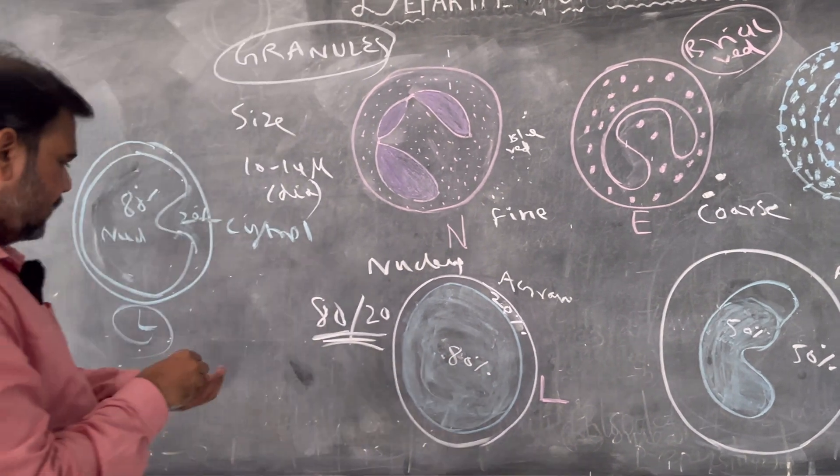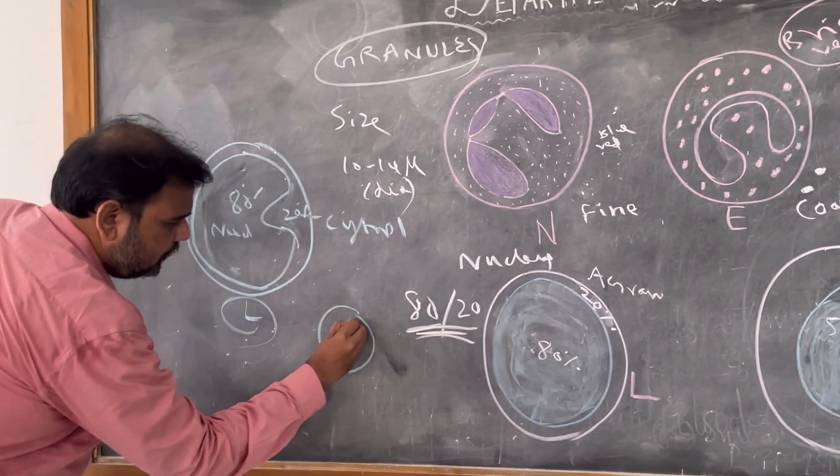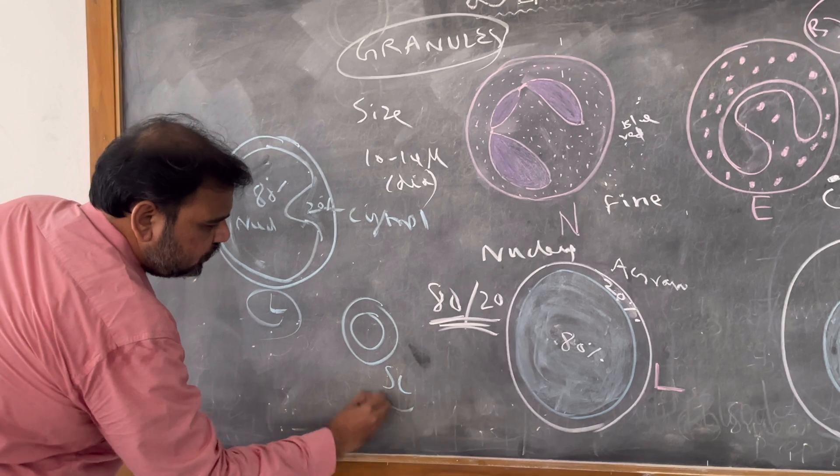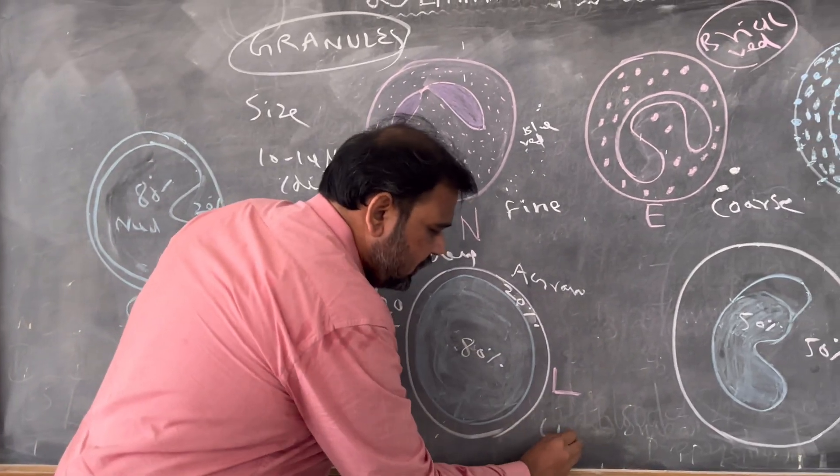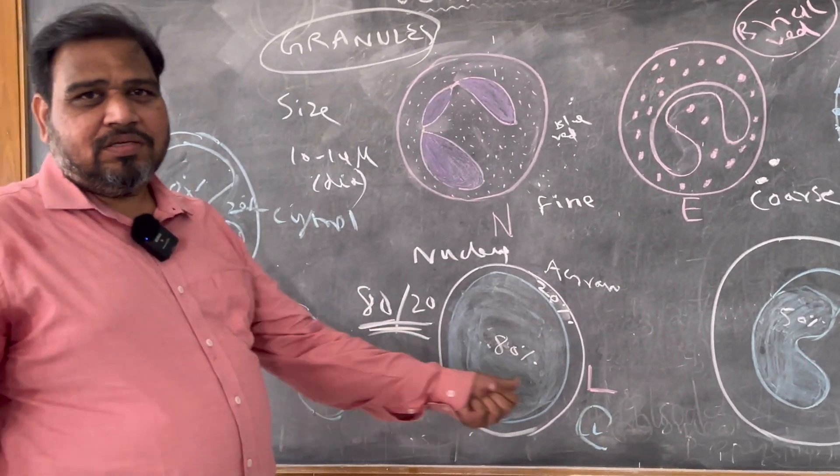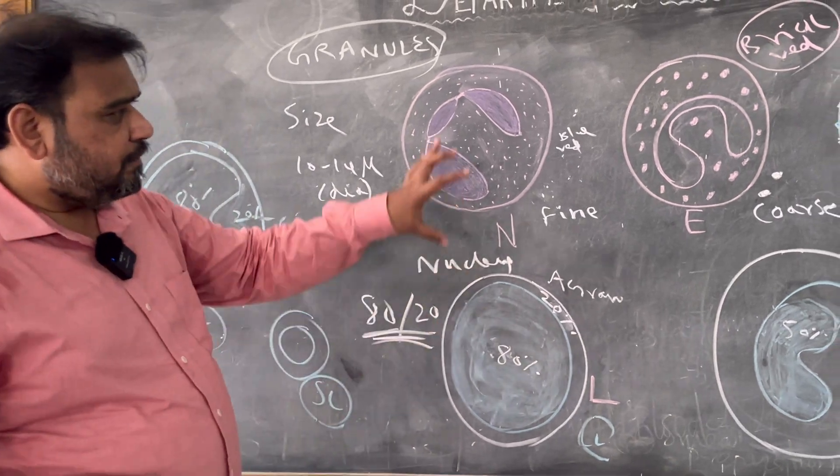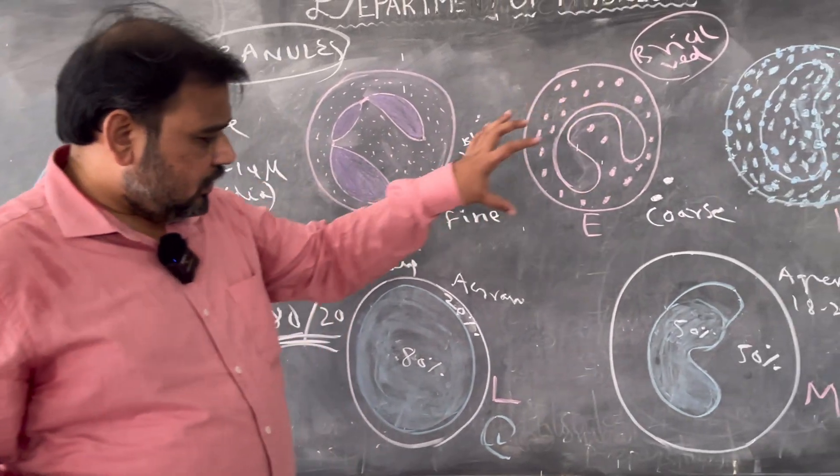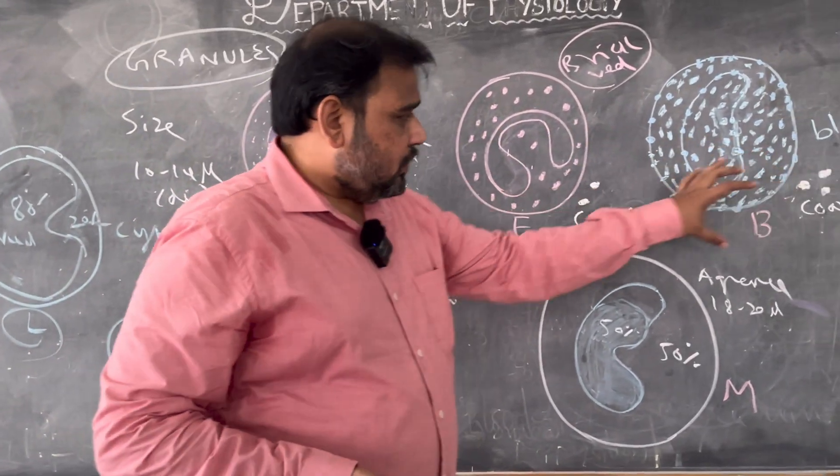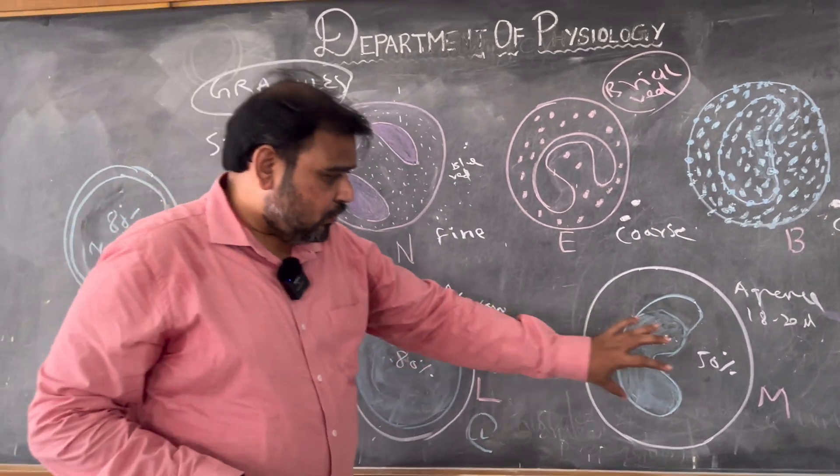If initially you are able to see very small like this, then you can tell small lymphocyte. This is large lymphocyte. I do not think small lymphocyte, large lymphocyte differentiation is needed. You just mention neutrophil, eosinophil, basophil, lymphocyte, monocyte.